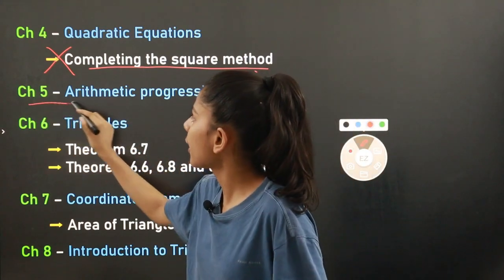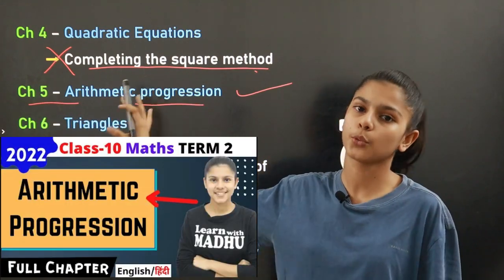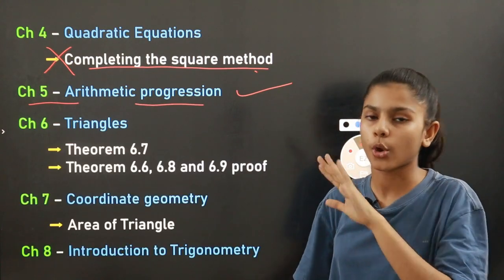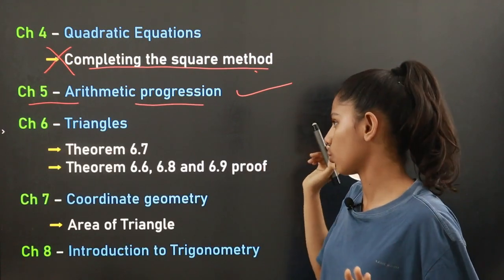Chapter number five is Arithmetic Progression. Nothing has been reduced from this chapter — it is the whole chapter.